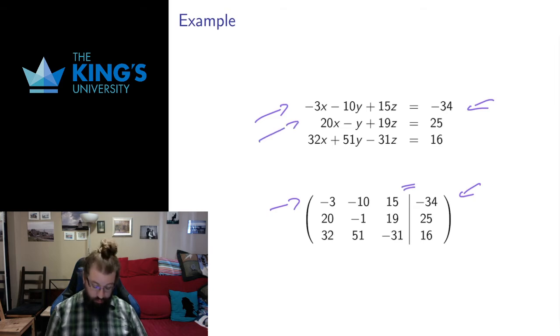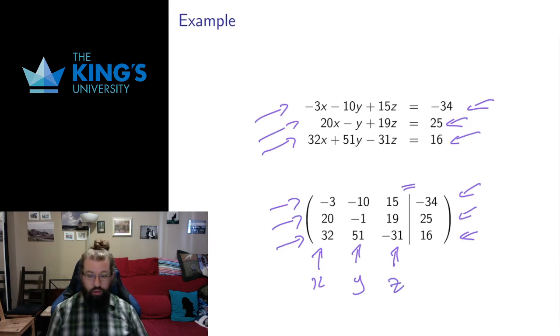Second equation becomes the second row, 20, negative 1, 19. There's your 20, negative 1, 19. The other side, the equal sign, 25 shows up there. Third row, 32, 51, negative 31. Those coefficients show up there. And the constant, 16 shows up there. This is the x column. This is the y column. This is the z column. And the column after the separation, after the vertical line, is the constants column.